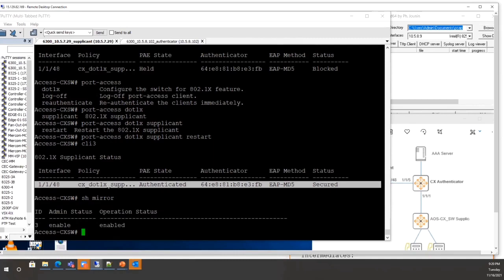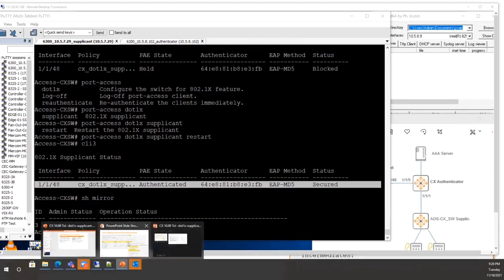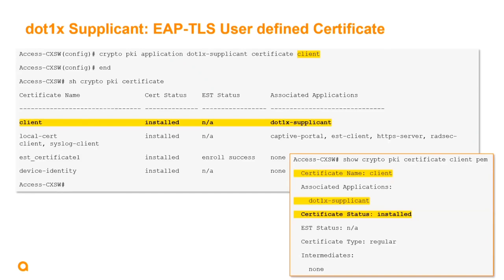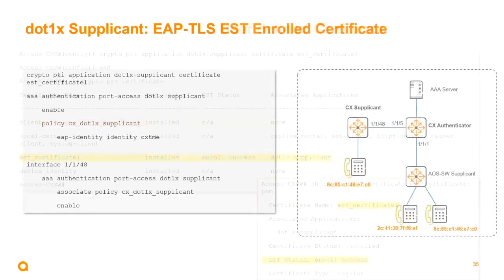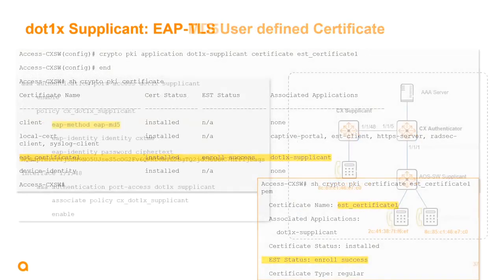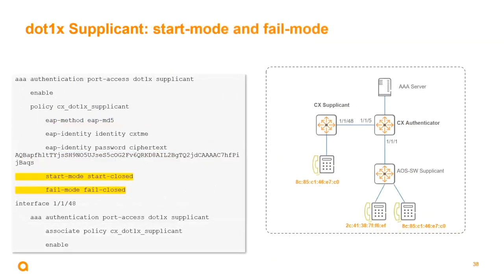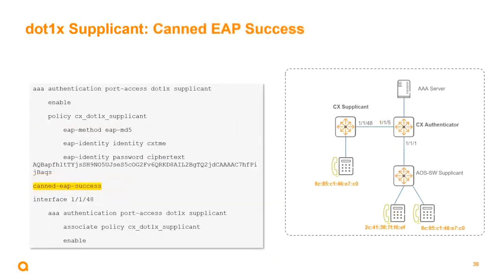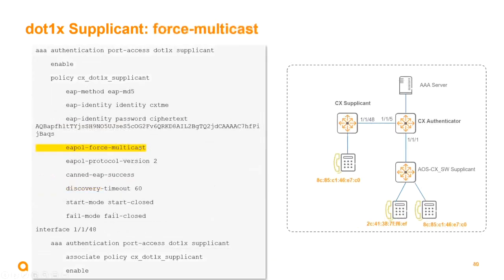In summary, the demo covered EAP-MD5, EAP-TLS with user-defined certificate, and EST certificate enrollment. For EAP success configuration, start mode, fail-closed mode, force multicast — these configurations are shown on the slides. For example, EAP-MD5 config, start-closed policy configuration for CAIP success, and force multicast policy configuration are all available for reference.